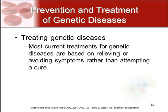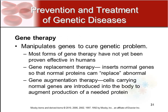Most current treatments for genetic diseases are based on relieving or avoiding symptoms rather than a cure, because it's very hard to change genes that are already forming and reproducing. There have been many studies on gene therapy, which manipulates genes in an attempt to cure the genetic problem, but most forms have not yet been proven effective in humans. Gene replacement therapy inserts normal genes so normal proteins can replace abnormal ones. Gene augmentation therapy introduces cells carrying normal genes to augment production of the needed normal proteins.